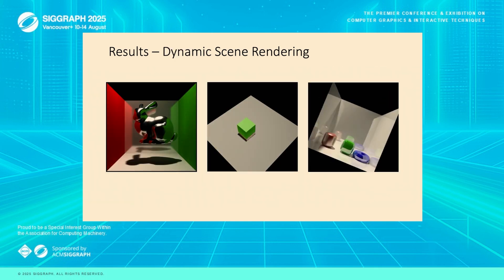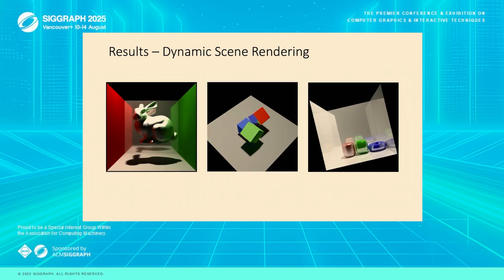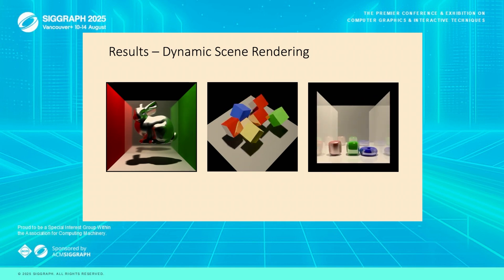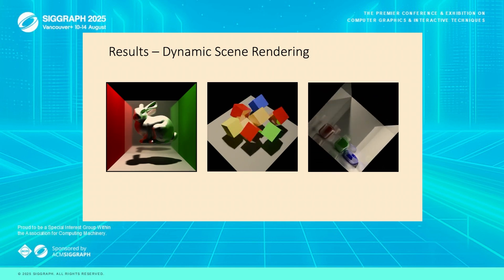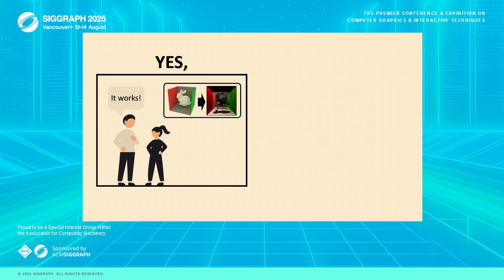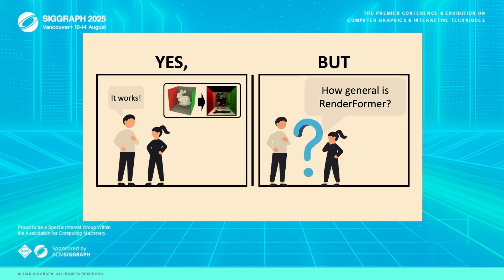We can also use Renderformer to render dynamic scenes and create smooth, consistent animations by rendering each frame separately, demonstrating that Renderformer is temporally consistent. With all these results, we know that Renderformer can render scenes, but many of you may be wondering how general this rendering pipeline can be and what the limitations are on scenes that can be correctly rendered. To find out, we put the model through a series of rigorous generalization tests.